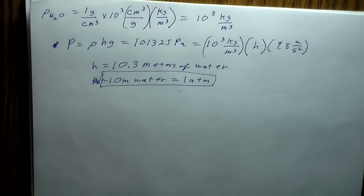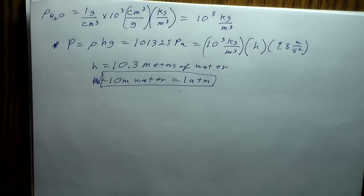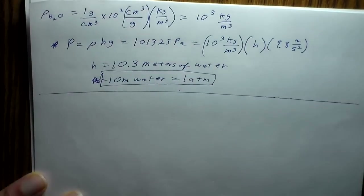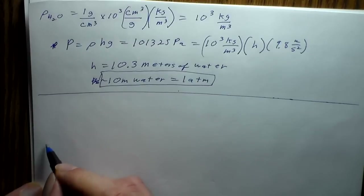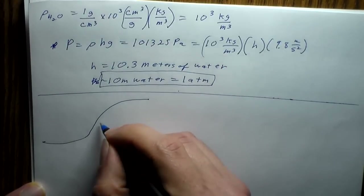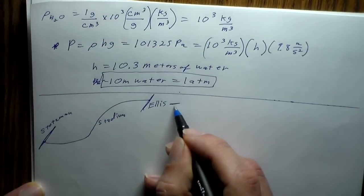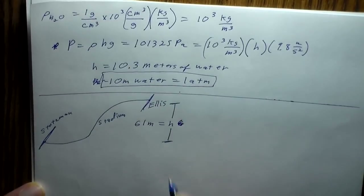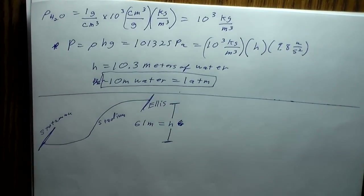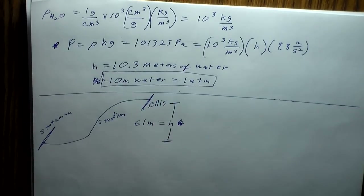Using this pressure equation, let's examine something familiar — going up and down the hill on Stadium between Ellis and Stoltzman. The height difference on that hill is 61 meters, measured using Google Earth. What is the pressure difference between the top and the bottom of the hill?